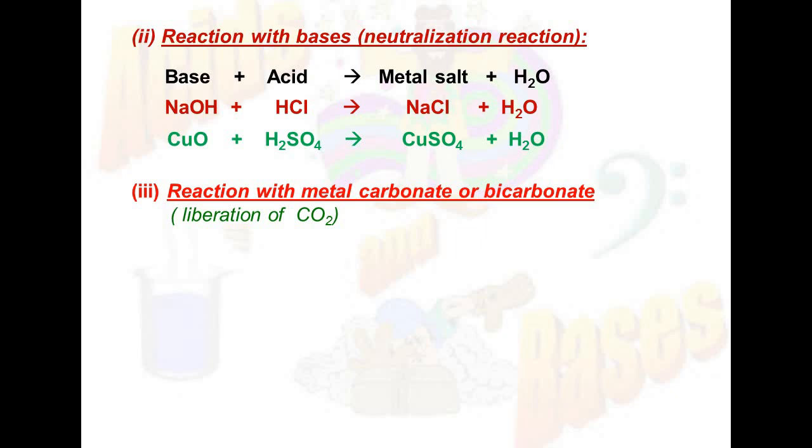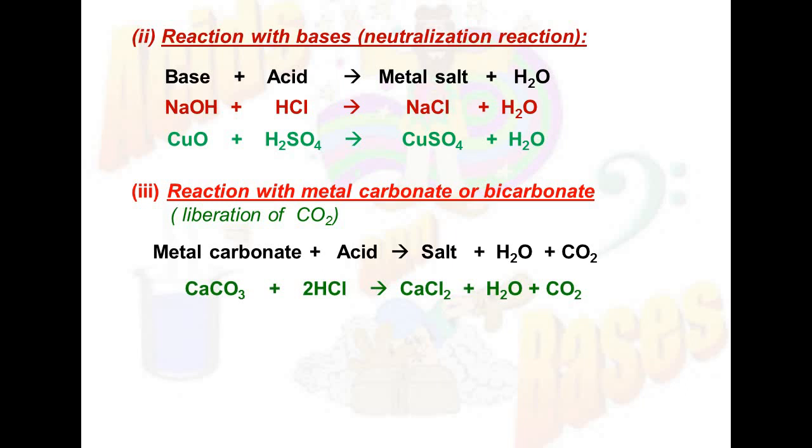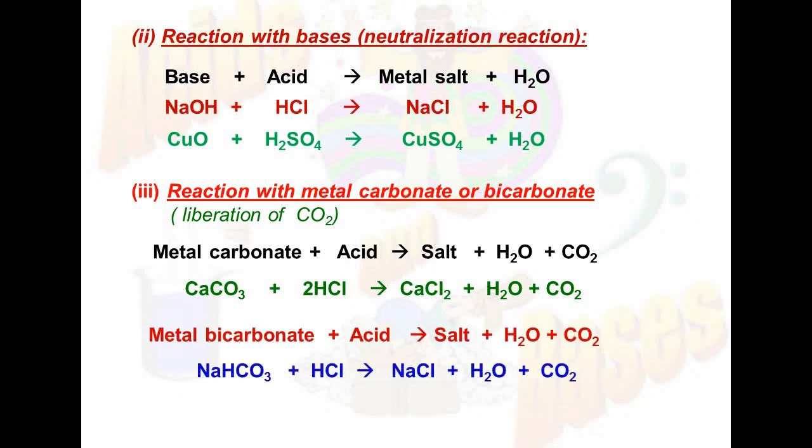Fourth reaction: with metal carbonate and bicarbonate. Always remember that whenever any metal carbonate or bicarbonate reacts with dilute acid, especially HCl or H2SO4, they produce their metal salt plus water and liberate carbon dioxide gas. For example, calcium carbonate plus HCl gives calcium chloride plus water plus carbon dioxide gas. Similarly, sodium bicarbonate reacts with HCl to give NaCl plus water plus carbon dioxide gas.